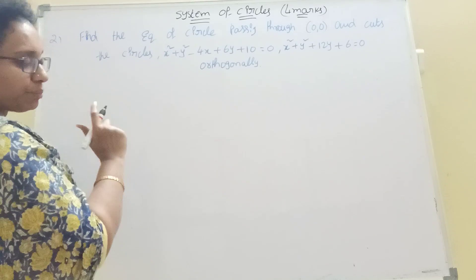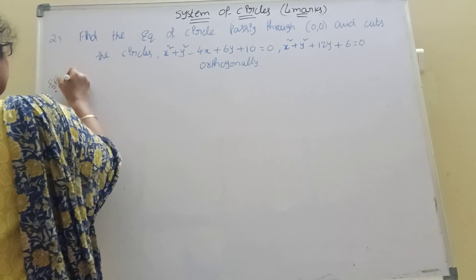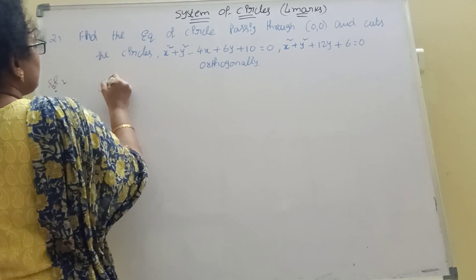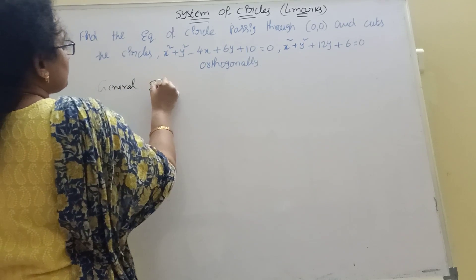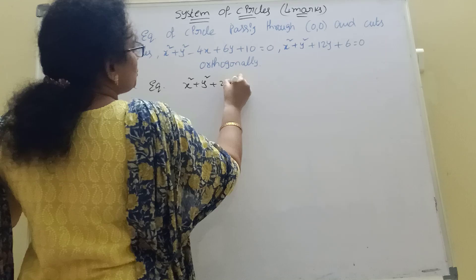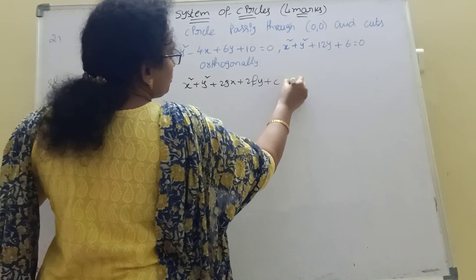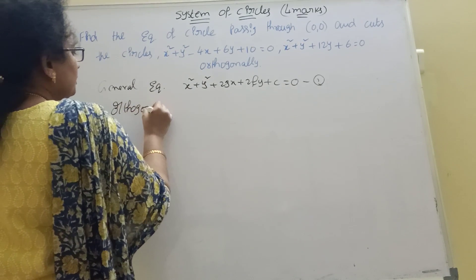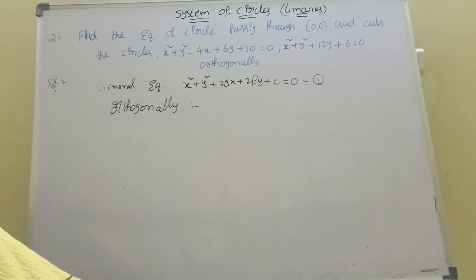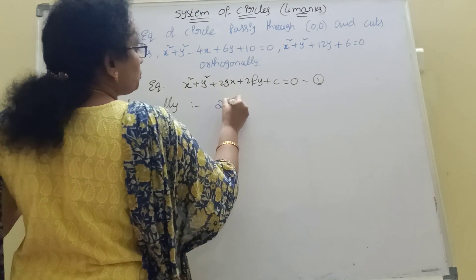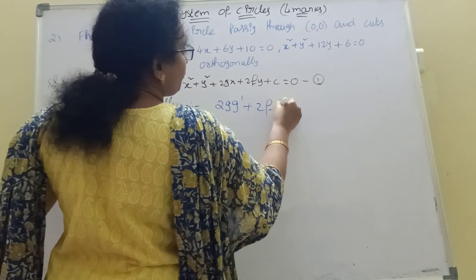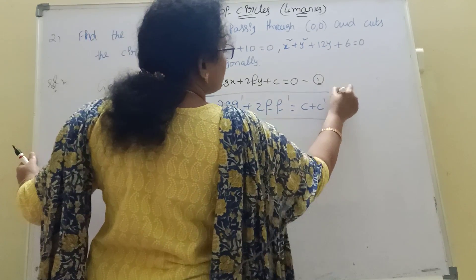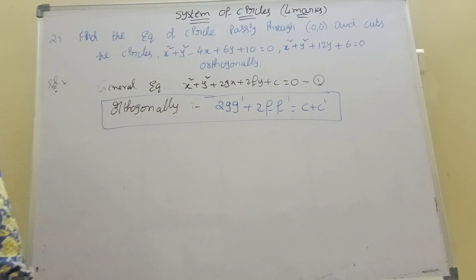Now getting the orthogonal condition. First, the standard general equation: x² + y² + 2gx + 2fy + c = 0. The orthogonal condition formula: 2gg' + 2ff' = c + c'. This is the very important orthogonal condition formula: 2gg' + 2ff' = c + c'.